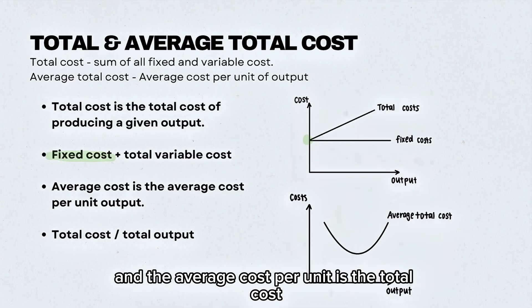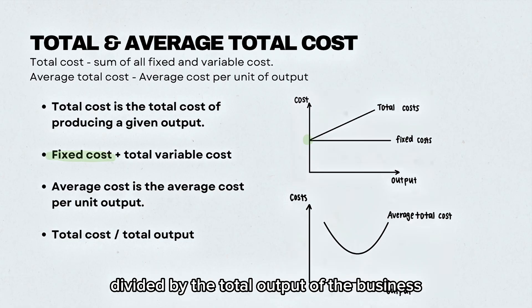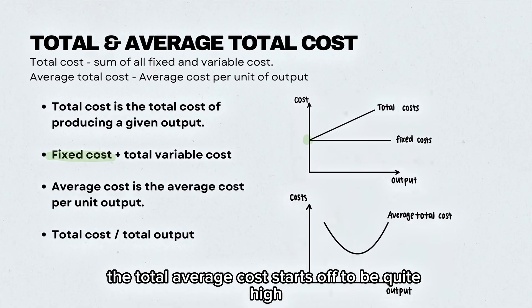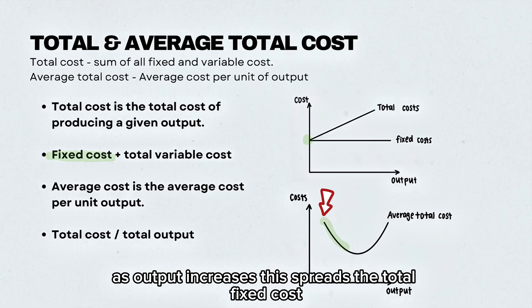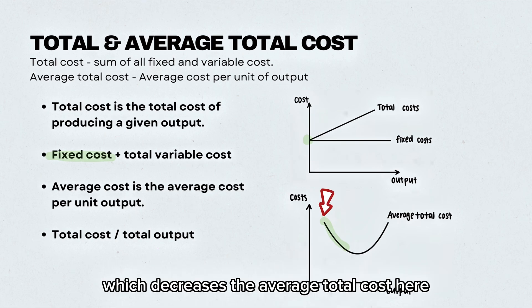The average cost per unit is the total cost divided by the total output of the business. The total average cost starts off quite high. This is due to high fixed costs and low output. As output increases, this spreads the total fixed costs, which decreases the average total cost.